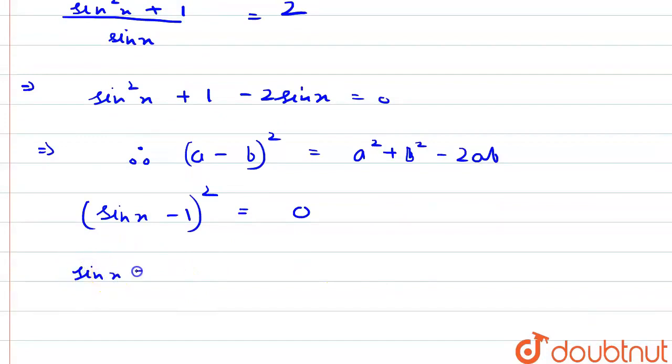And we can also write this as 1 upon cosec x equal to 1, which means cosec x equals 1.